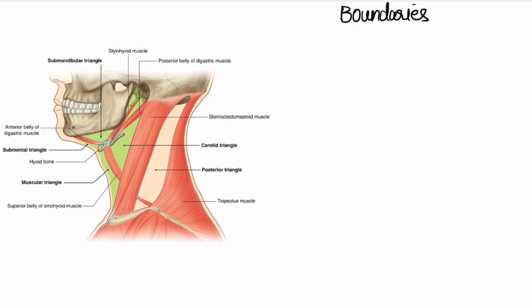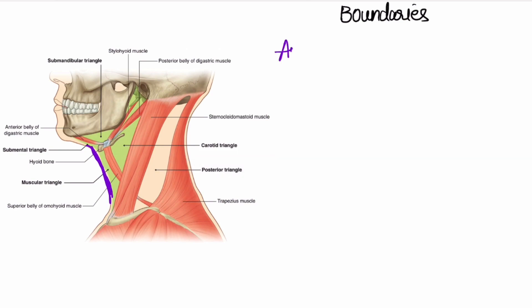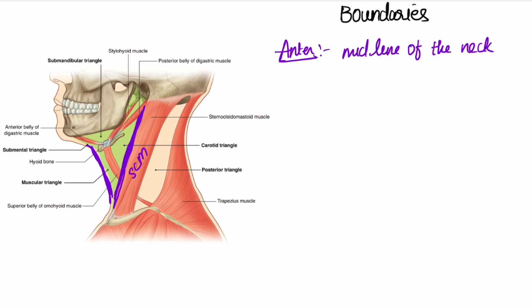The anterior boundary is the midline of the neck. The posterior boundary is the anterior border of the sternocleidomastoid muscle.